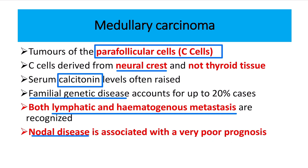In exam questions about medullary thyroid cancer, they usually denote a familial association. When there is a familial association of thyroid cancer or neck swelling, we should keep in mind that the diagnosis may be medullary thyroid cancer. C cell, parafollicular cell, and neural crest cell are the most important points for diagnosing medullary cancer.